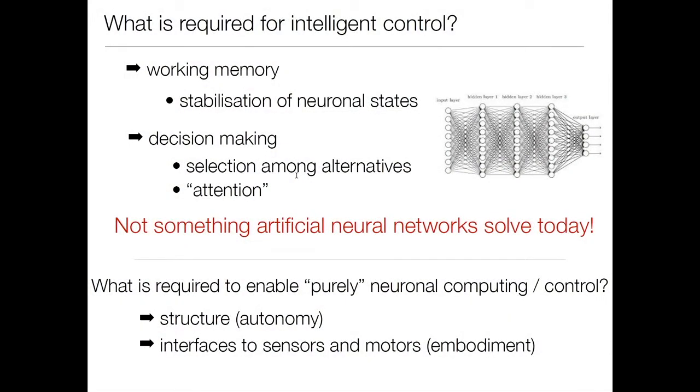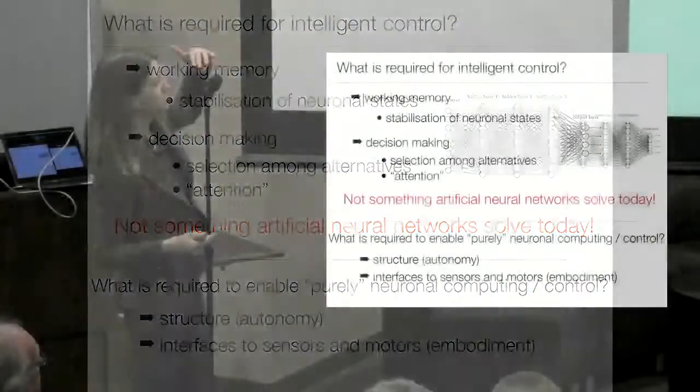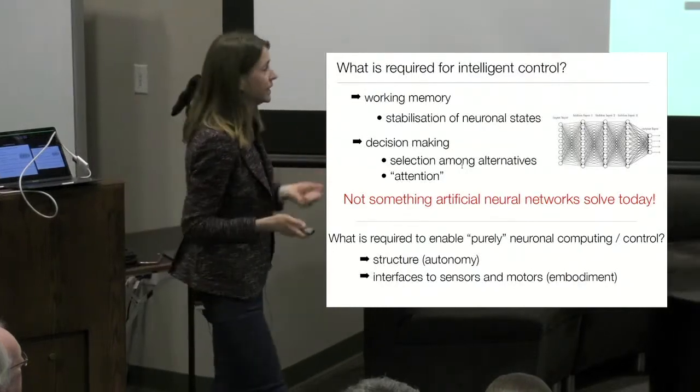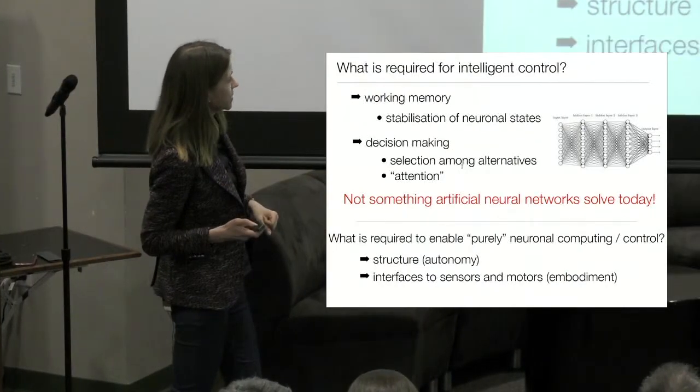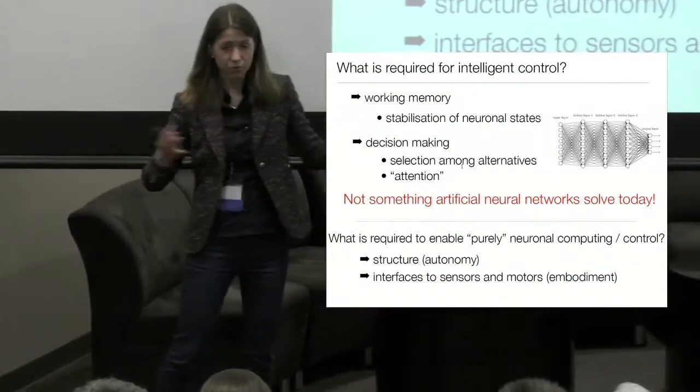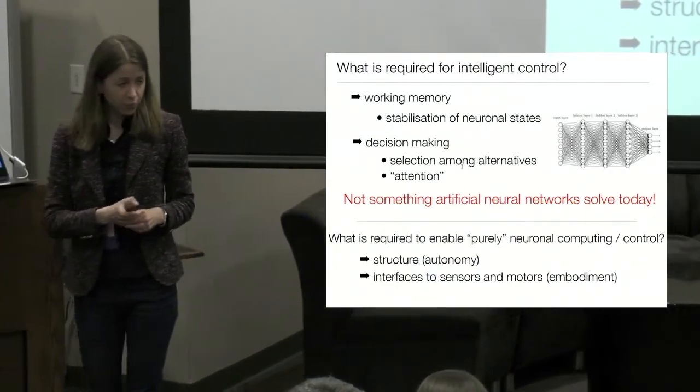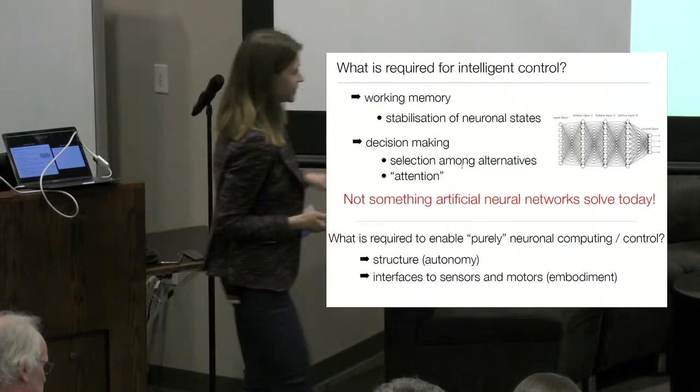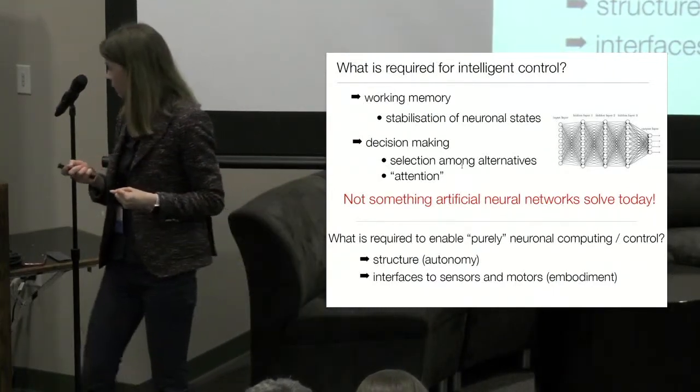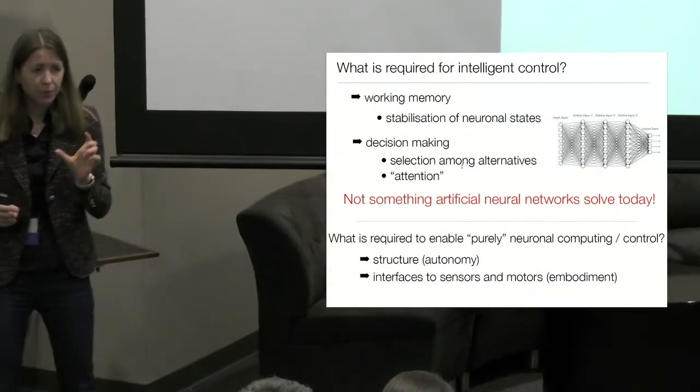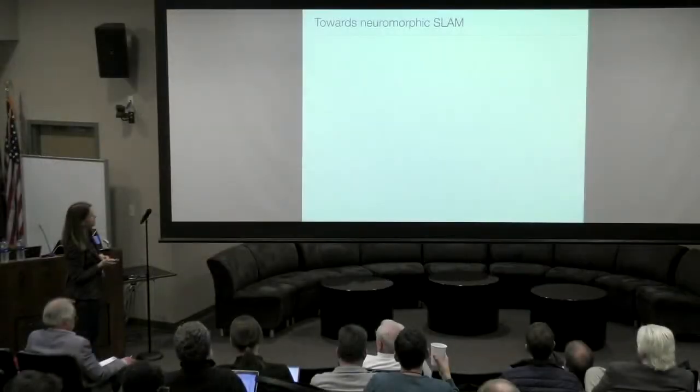So if we imagine that we would have such neuronal control system, what do we need in order to make it work? And the motif of my talk will be that we need a lot of structure. I think it was John who asked this question - how much can we learn from scratch and how much structure might be needed? My main message is we need a lot of structure in order to have this working memory mechanism, in order to have decision-making mechanism, in order to be able to control some body that can generate movement in an environment. And you also need very good interfaces to sensors and motors in order to sense the world around you and in order to move effectors. And these interfaces are very often the bottleneck, even for our neuromorphic systems, for most of them.